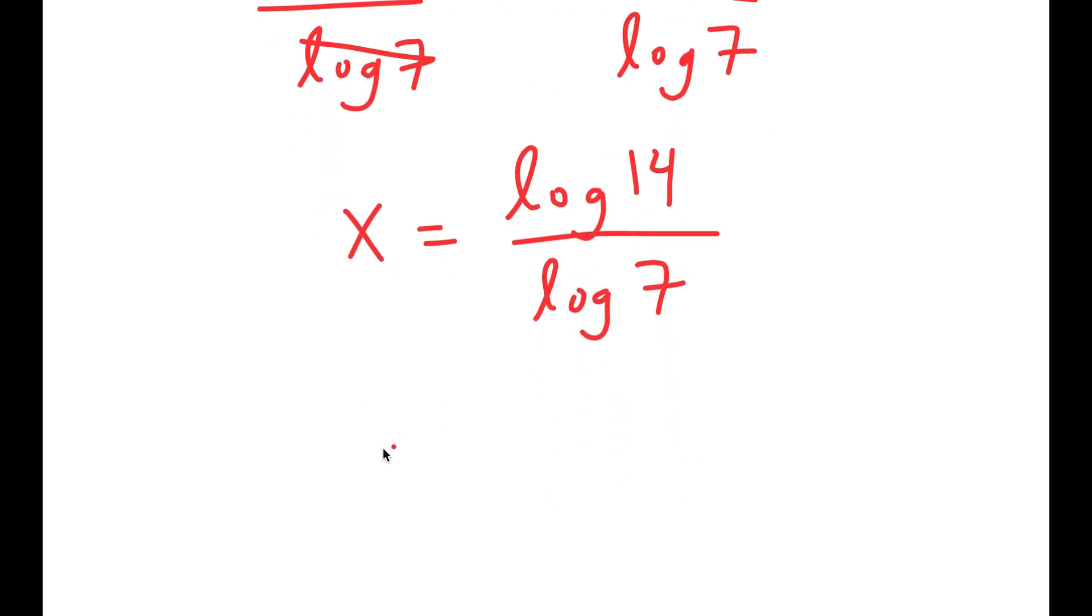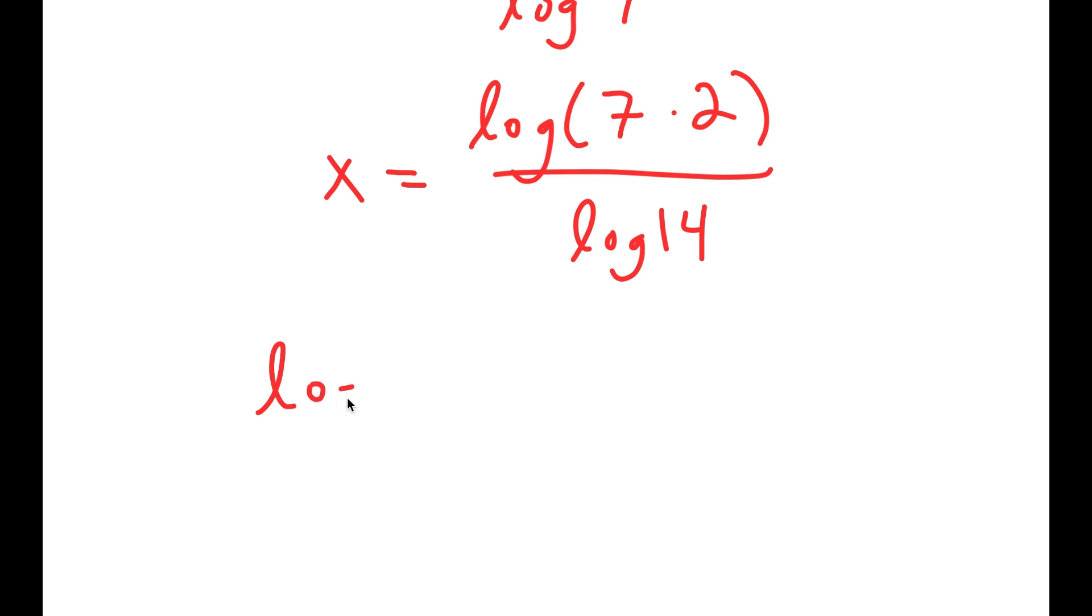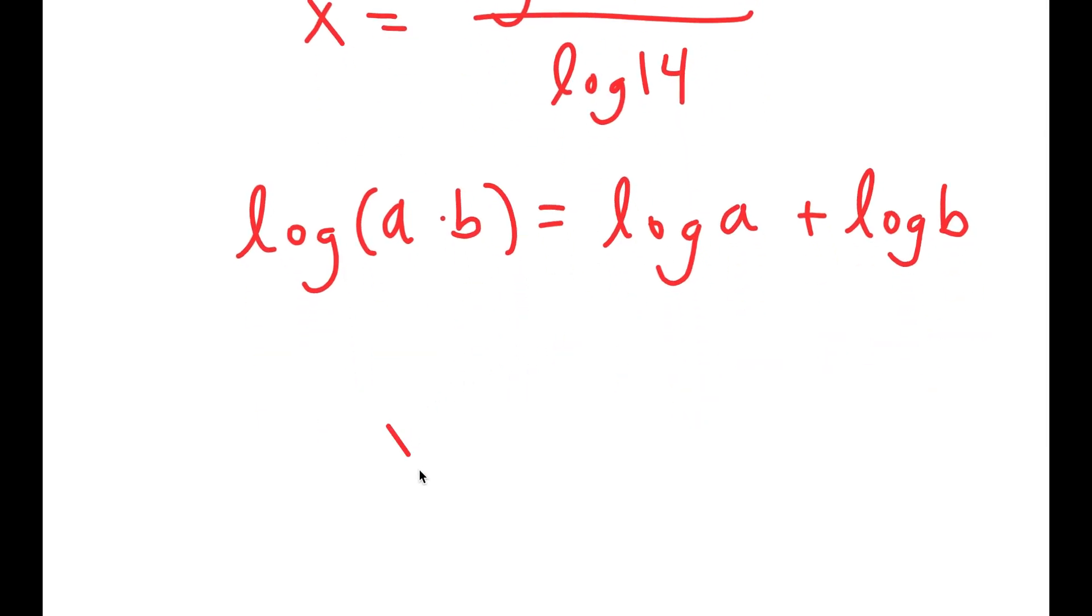Now from here, I can rewrite log 14 as log of 7 times 2. And if I have something in the form log of a times b, this is equal to log a plus log b. So log of 7 times 2 is equal to log of 7 plus log 2.